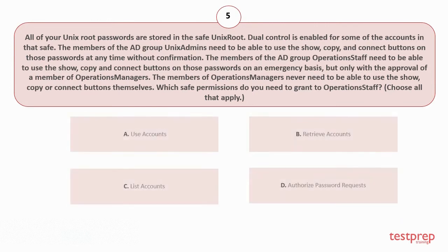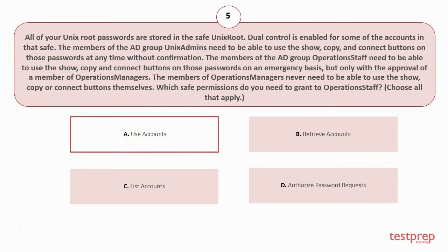Choose all that apply. Your options are: A. Use accounts, B. Retrieve accounts, C. List accounts, D. Authorize password requests. The correct answer is option A.